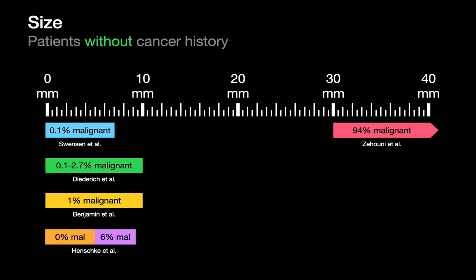On the other extreme of this chart is data from Zuhuni, who looked at masses over 30 millimeters, and you can see the malignancy rate is quite different — 94% malignancy rate for masses over 30 millimeters. So the TLDR: the smaller the nodule, the more likely it's benign, and these are the kind of numbers we're seeing.